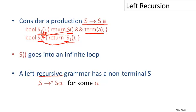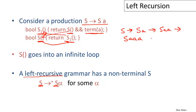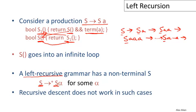A left recursive grammar is any grammar where, starting with a non-terminal and doing some non-empty sequence of rewrites, you get back to a situation where the same symbol is still in the leftmost position. In this grammar, S goes to S A, goes to S A A, goes to S A A A, and so on. We always have a long string of A's with S on the left end. Since the only way to match input is to generate a terminal symbol first, having a non-terminal always at the front means we never make any progress. Recursive descent does not work with left recursive grammars.